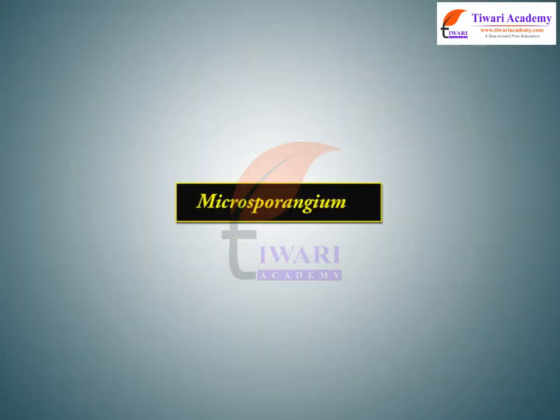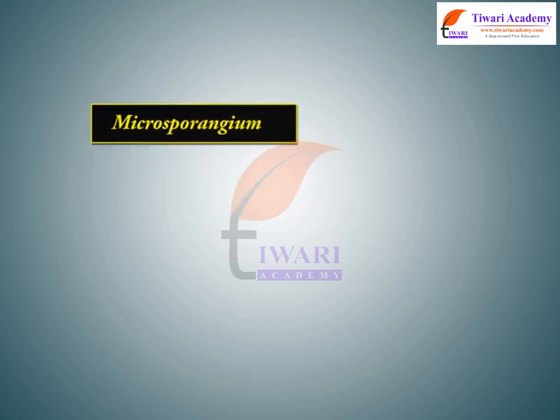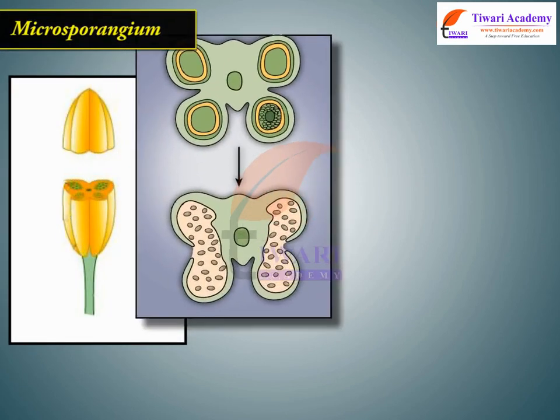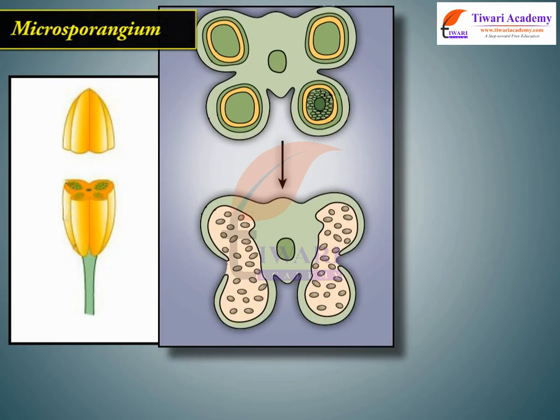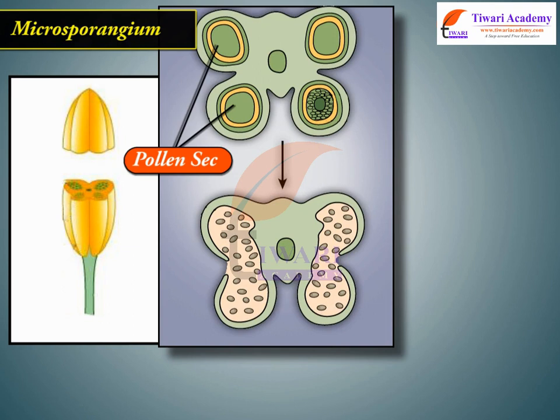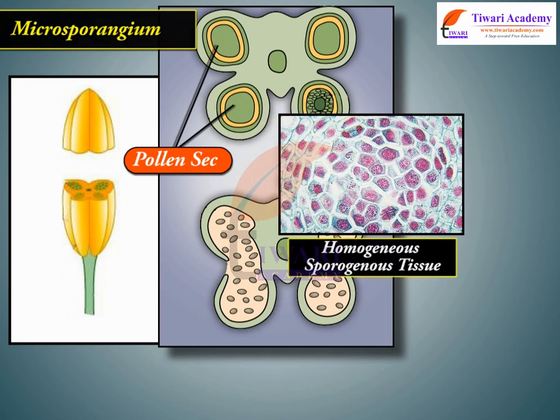Microsporangium: A microsporangium or future pollen sac is a cylindrical sac which appears circular in transverse section. It consists of two parts: outer wall and central homogenous sporogenous tissue.